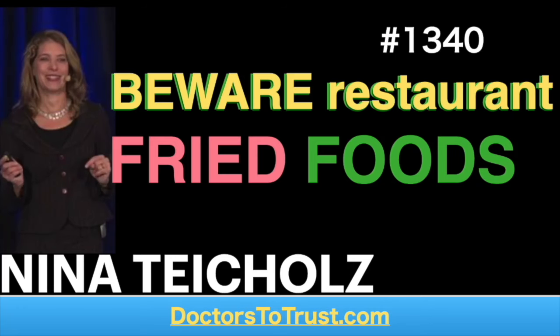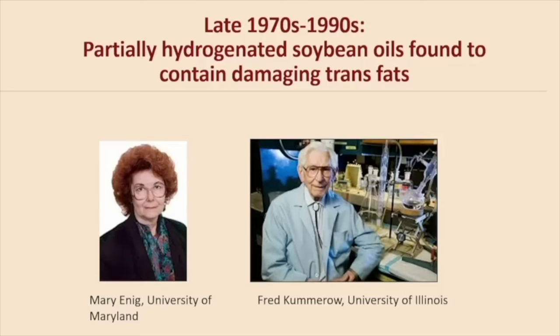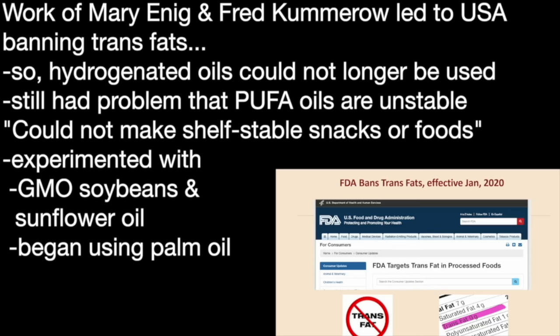Starting in the late 1970s with Mary Enig — an unsung hero who was one of the first people to find out that hydrogenated oils, the backbone of Crisco and margarine, actually contained trans fats, and that trans fats were harmful and caused heart disease — and also Fred Kummerow, who spent his entire career fighting trans fats, and later Walter Willett. This led effectively in the U.S. to a ban on trans fats; in Europe there's a severe limit on them. It was no longer possible to use these hydrogenated oils because of the trans fat side effect they produced.